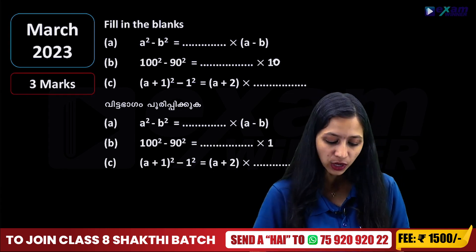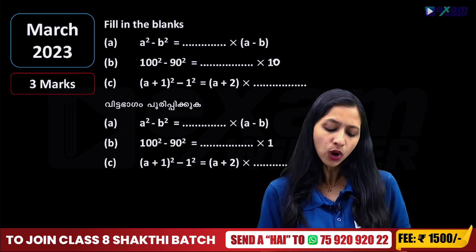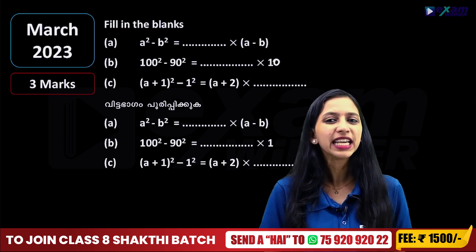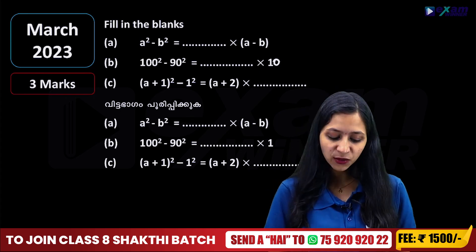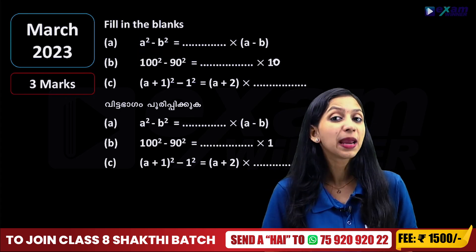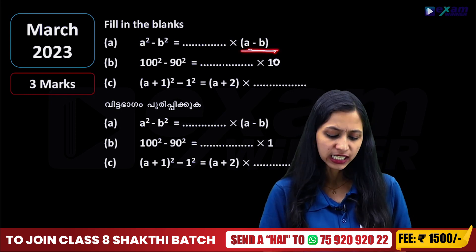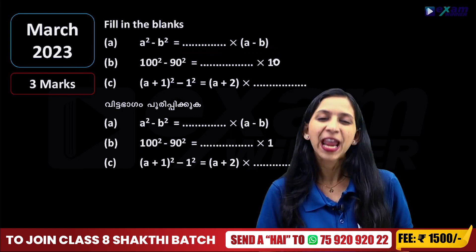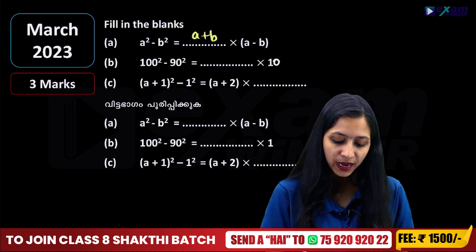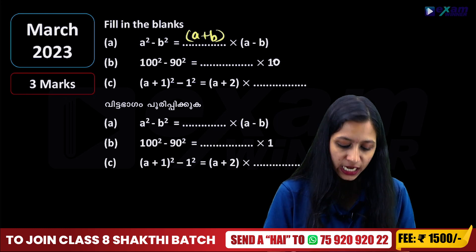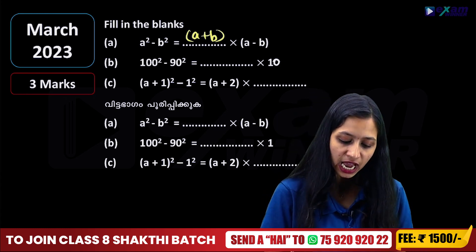How do we do it? First, fill in the blanks: A²-B² is equal to dash into A-B. What is A²-B²? We are going to use an identity. A-B is already there. So fill in the blanks — what is A²-B²? The answer is (A+B) into (A-B). If you have one mark, it goes in your pocket. It's very simple.